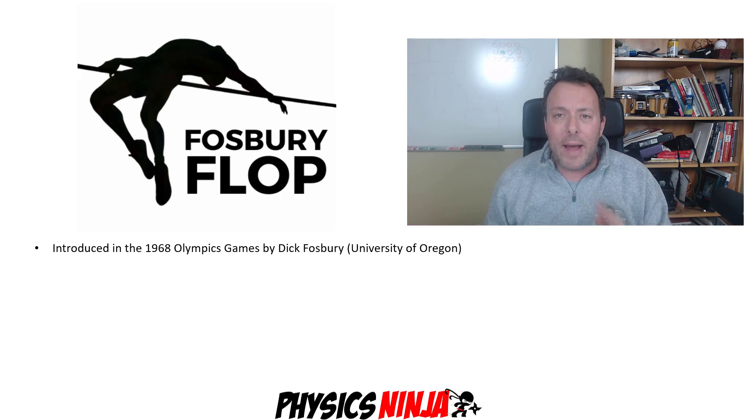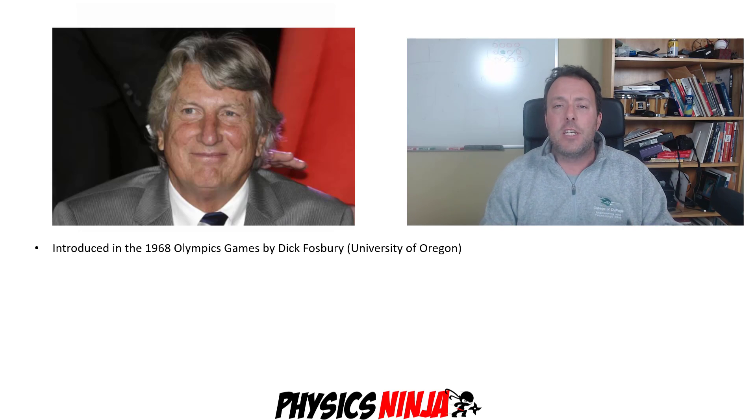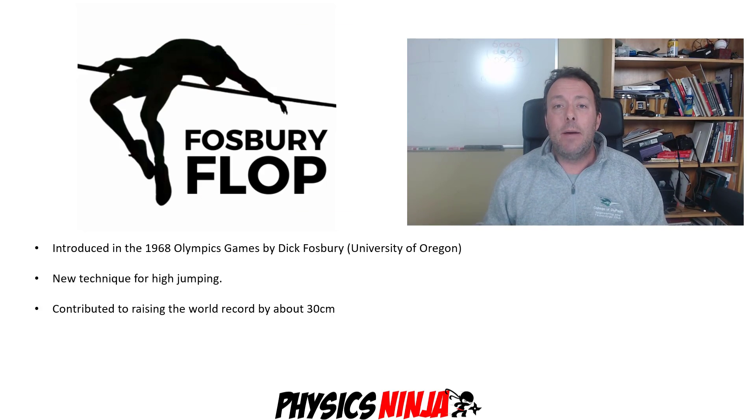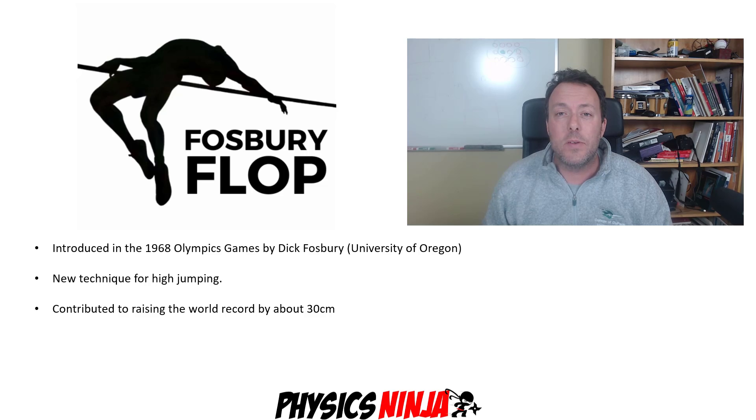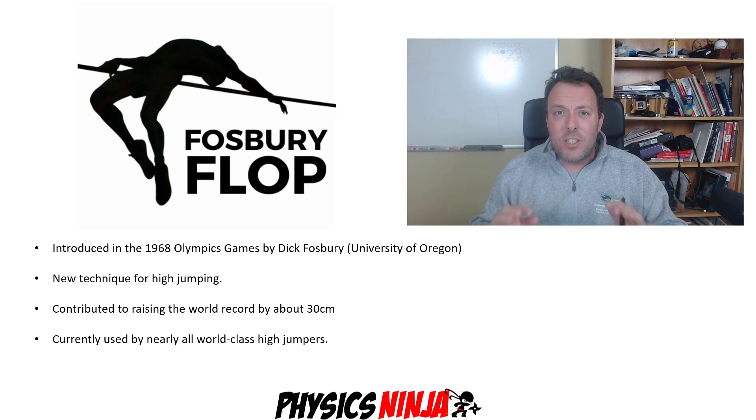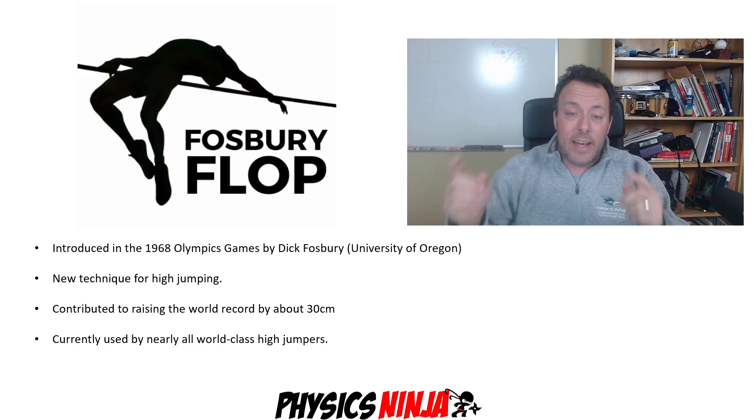First, a little historical background. It was first introduced in 1968 by Dick Fosbury from the University of Oregon. It was a brand new high jumping technique that helped raise the world record of the high jump by nearly a foot, like 30 centimeters. Currently, it's used by nearly all world-class high jumpers. I want to thank Bill for telling me about this problem - it's a great physics problem, so let's have a look at it.